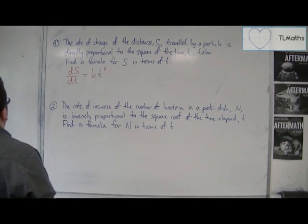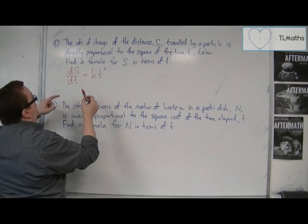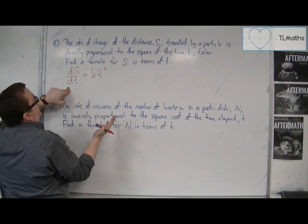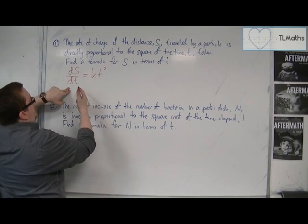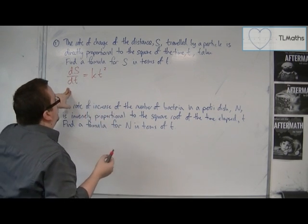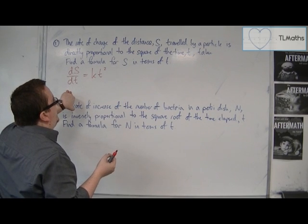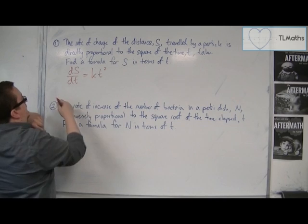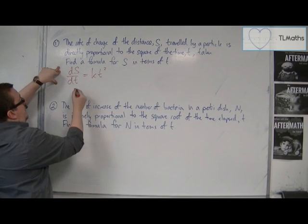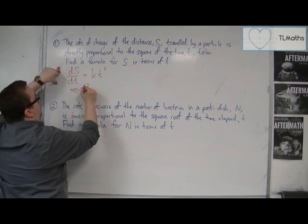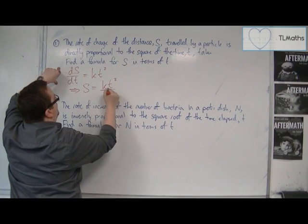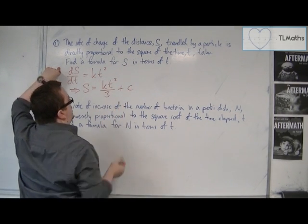From that we can then solve it. We can just integrate both sides in this case because that's quite nice. We don't even need to rearrange to separate variables because multiplying by dt and integrating will get us to exactly the same thing. So s will be equal to kt³/3 plus a constant c.